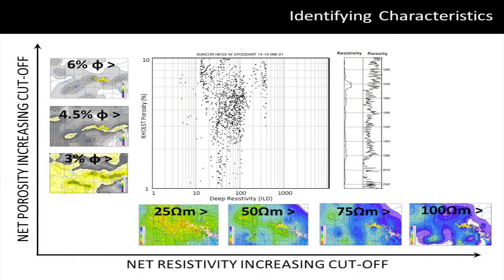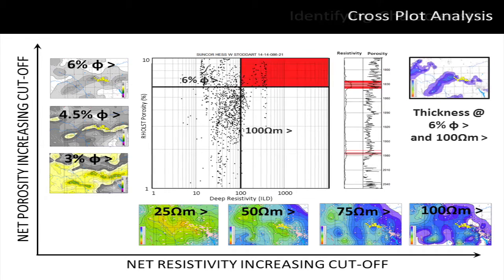We also use cross plot analysis. Here we are looking at the porosity and resistivity data for one well, with porosity plotted on the y-axis and resistivity plotted on the x-axis. The maps along the bottom are net resistivity at various cutoffs with no porosity cutoff, and the maps along the side are net sand maps at varying porosity cutoffs with no resistivity cutoff. On the cross plot we can start to draw polygons around data to identify where particular rock quality characteristics might be occurring in a well. The red polygon picks out rock quality of greater than 6% porosity and 100 ohm-meter resistivity, and we can see the corresponding parts of the well where those cutoffs are met and map those thicknesses.